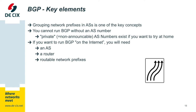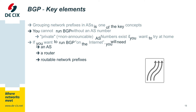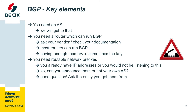If you want to run BGP publicly on the internet, here is the shopping list you need: you need an autonomous system, you need a router, and you need routable network prefixes. As you are an ISP, I guess you already have a router somewhere — ask your vendor, check your documentation. Most routers nowadays can run BGP, and as I said before, having enough main memory is the key.